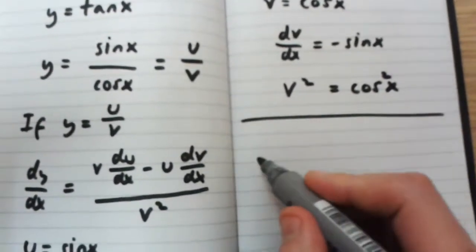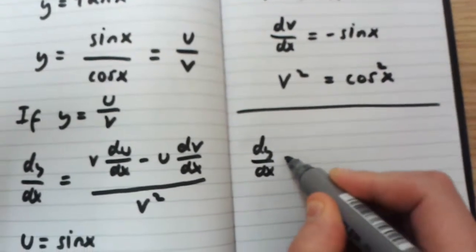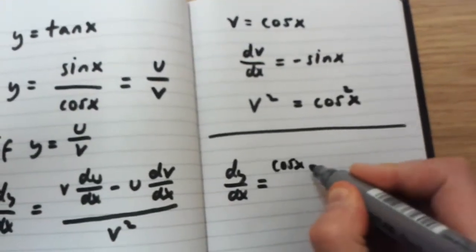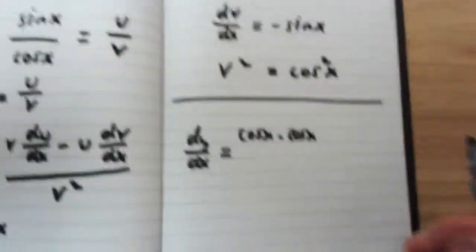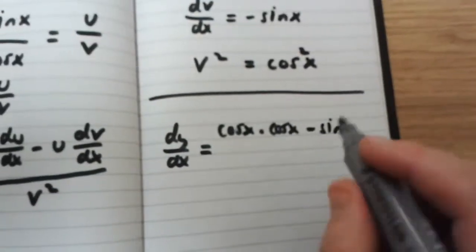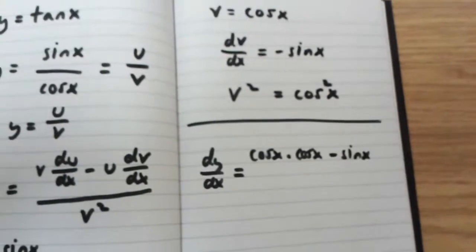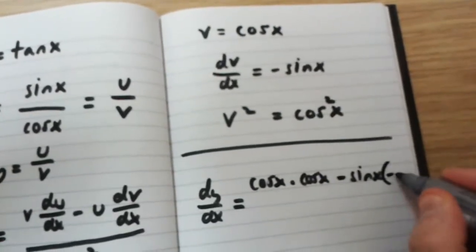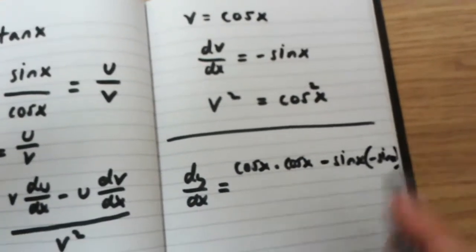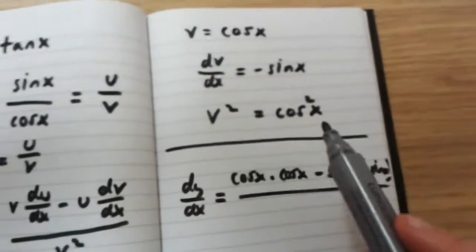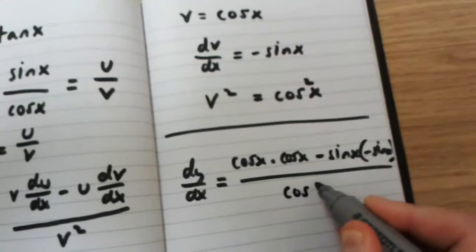So, we should have dy over dx equal to v, which is cos x, times du over dx, which is cos x, minus u, which is sin x, multiplied by dv over dx. dv over dx is minus sin x. So, I'm going to try and fit this in over here. This is minus sin x over here in the corner. Now, v squared is cos x squared.